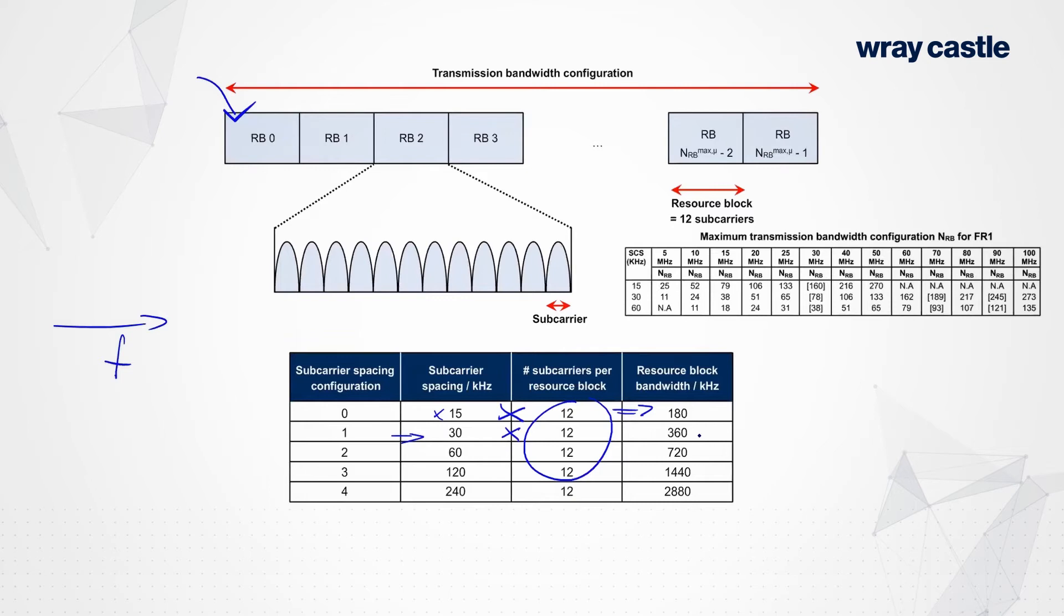So we've got 30 kilohertz times 12 now. And that of course now means that the resource block occupies 360 kilohertz. So you can see where this is going, that bandwidth there is now a variable factor. So when you change the numerology, you are changing the bandwidth of the resource block. And therefore the number of resource blocks that you can fit into a channel of a particular size.